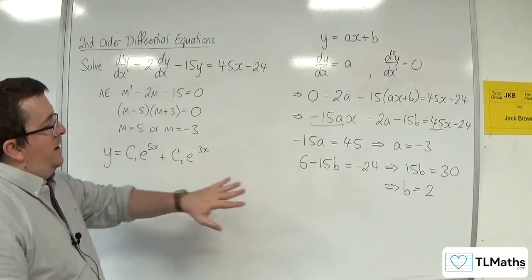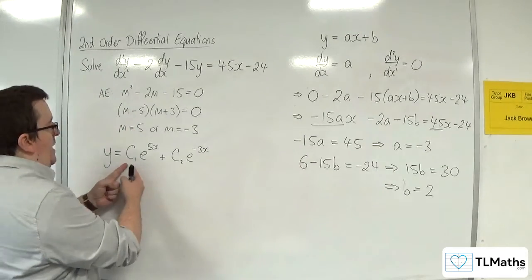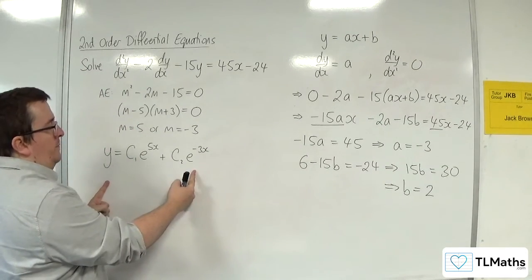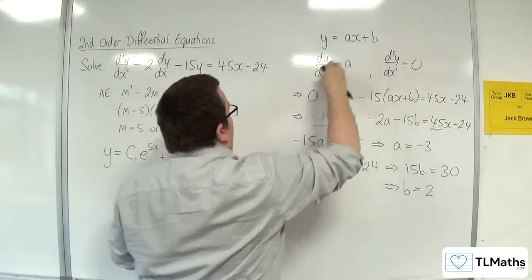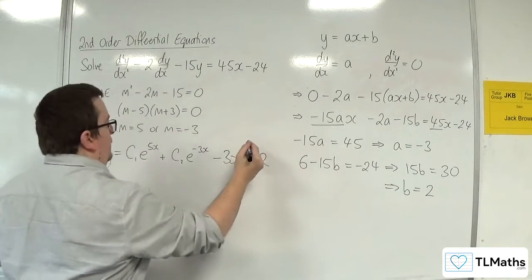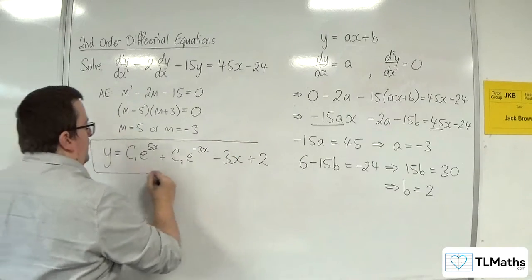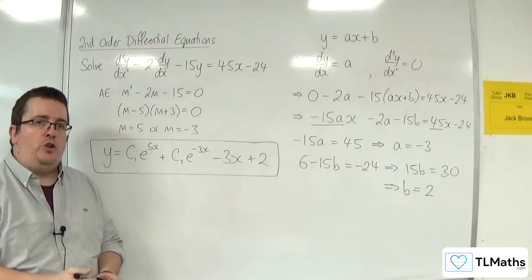So now I've got the values of a and b. So here is my complementary function. My particular integral will be -3x + 2. And so this is the general solution to my second order differential equation.